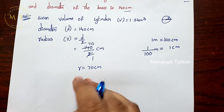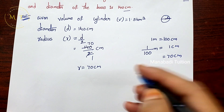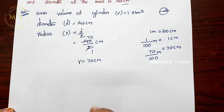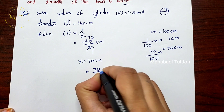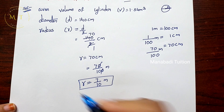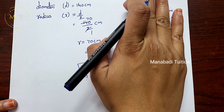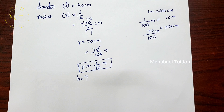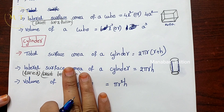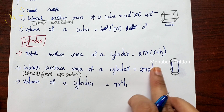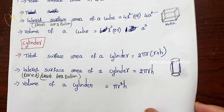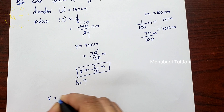So radius r = 7/10 meters. Now we find the height. We substitute values into the volume formula: V = π r² h. Pi value is 22/7, r = 7/10 m.